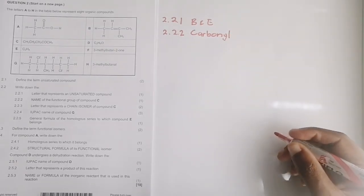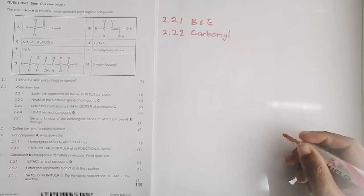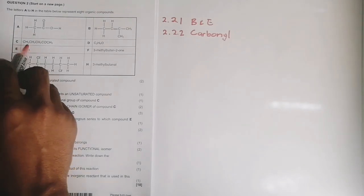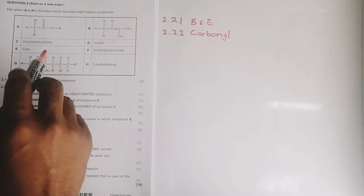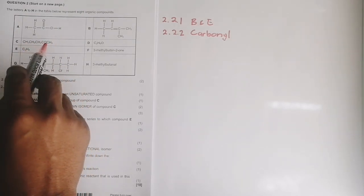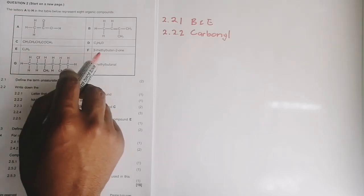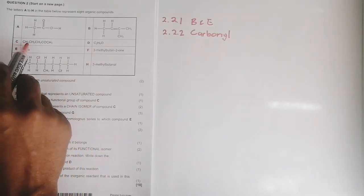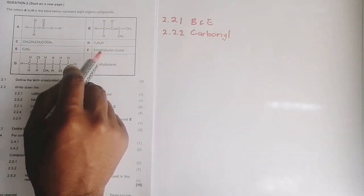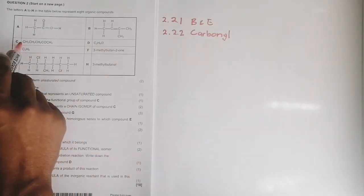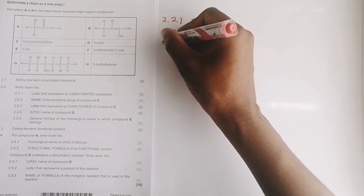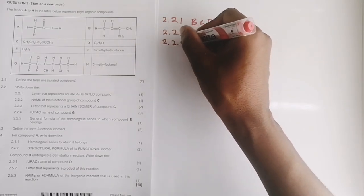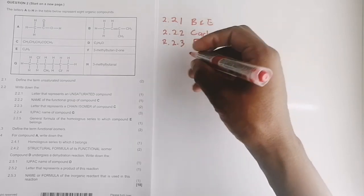Question 2.2.3 asks: write down the letter that represents the chain isomer of compound C. A chain isomer means we are looking for something in the same homologous series — so we need another ketone. Looking at compound F, counting the carbons: one, two, three, four, five — yes, it's a five-carbon ketone. So definitely, the answer for 2.2.3 is F.